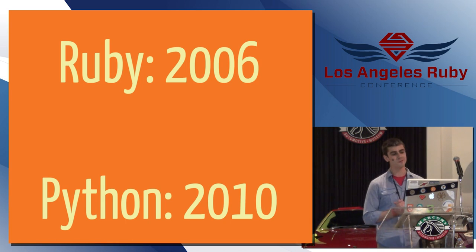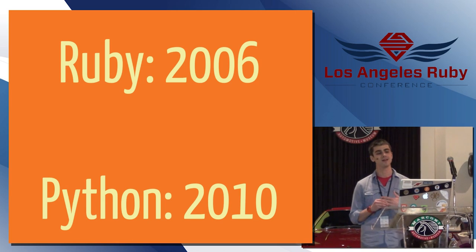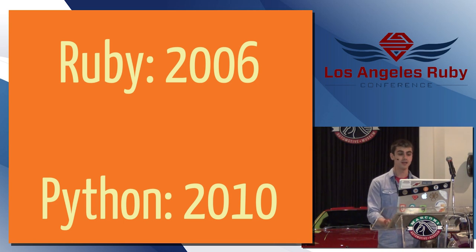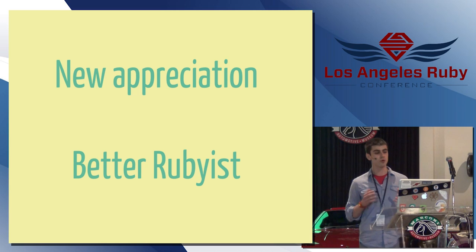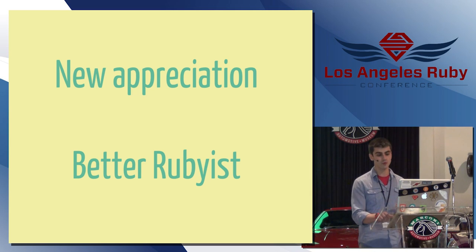I started doing Ruby professionally in 2006, and then when a specific client application required Python, I started doing Python in 2010. And, basically, it's been a great experience. I have a new appreciation for the language design decisions with each programming language, and I think I'm a better Rubyist for it.